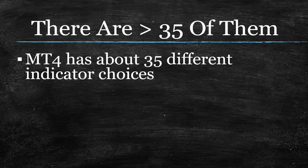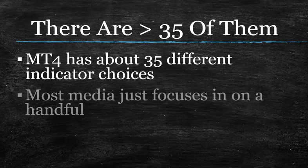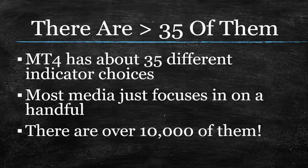Most places you see online only talk about about a third of those, if that. And I never understood this either — they're all right there in front of you for you to use. Some of the better ones that are already included never get spoken about. Never understood why that was. But don't just think what's right in front of you is all that's there. Like we said before, if I've tested over 2,000, there's more out there. There's actually over 10,000 different indicators you can use.